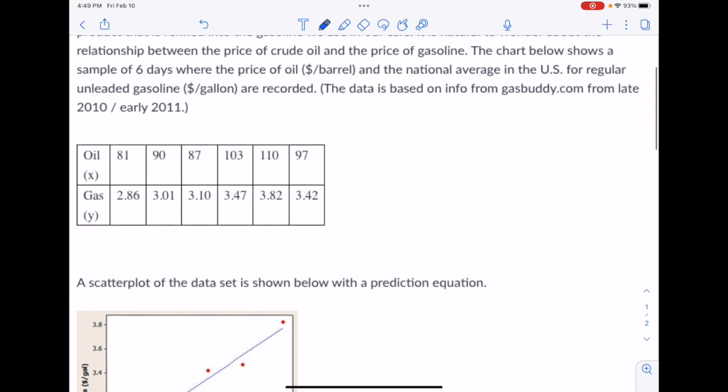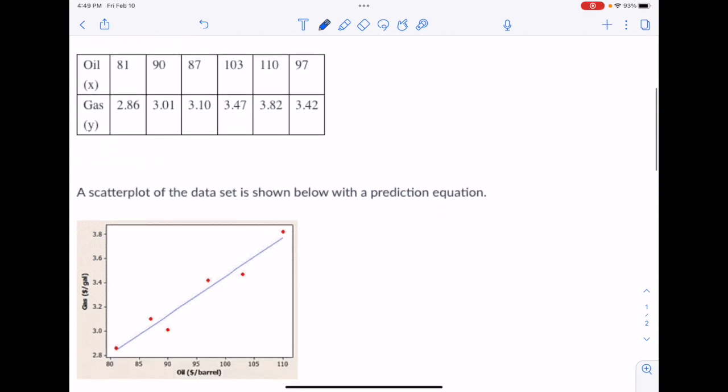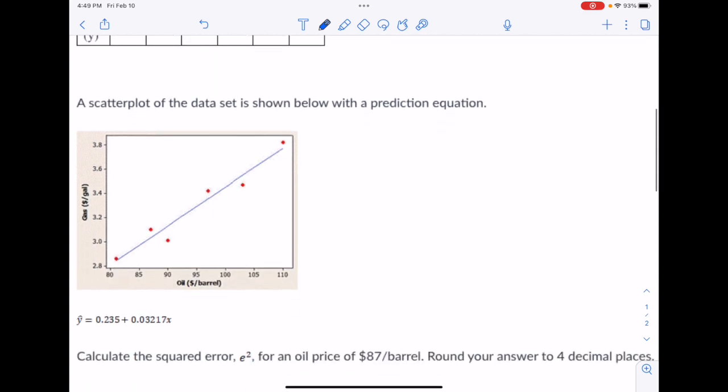They give us the data set here. They also give us a scatter plot, and then they give us a prediction equation that is used to model the data. And they ask us to calculate the squared error E squared for an oil price of $87 per barrel, and they want us to round that to four decimal places.